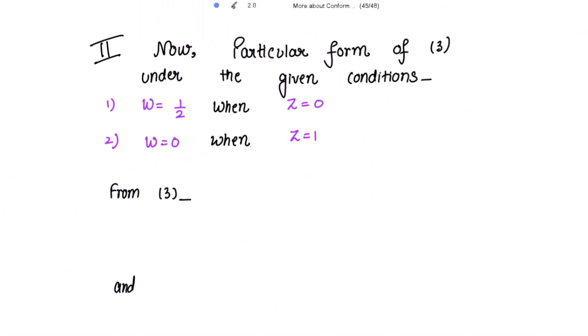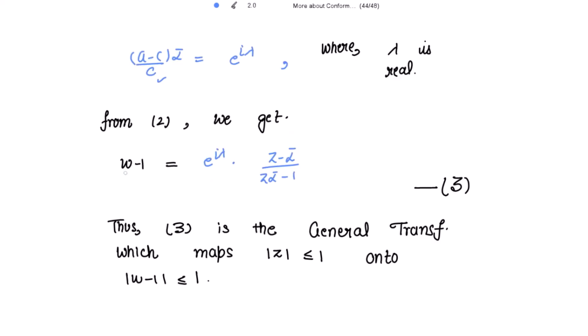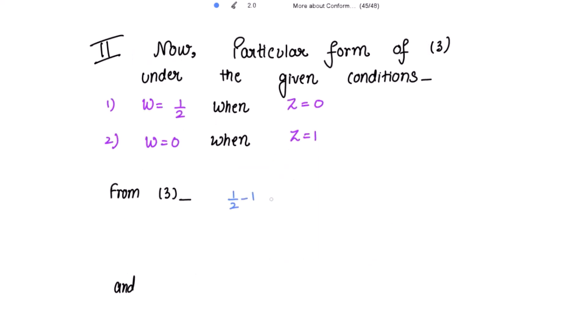Now applying the given conditions to equation 3. With w = 1/2 when z = 0: substituting gives 1/2 - 1 = e^(iλ) · (0 - α)/(0 - 1), so -1/2 = e^(iλ) · α. Mark this as the star equation.